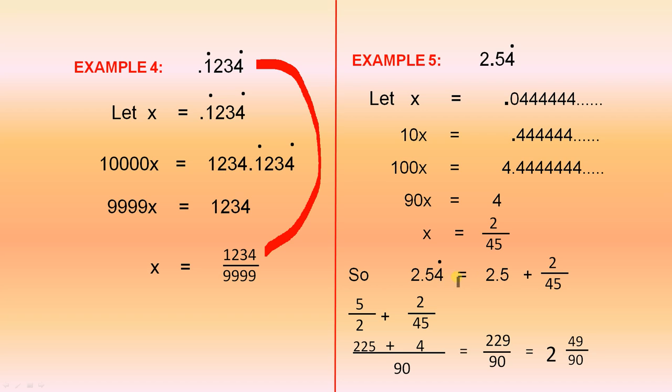Therefore 2.54 recurring is 2.5, which is that part there. See, I told you we'd use that one later. So that's that part there. And the 0.04 recurring is that part there. So when we add those two together, we have 5 over 2 plus 2 over 45, because 2.5 is 5 over 2. Now the 2 and the 45, so 2 and 45, both divide into 90. 2 into 90 goes 45. 45 times 5 is 225. 45 into 90 goes twice. Twice 2 or 4. Add those up. It's 229 over 90, which is 2 and 49 over 90. So that is the same as that.